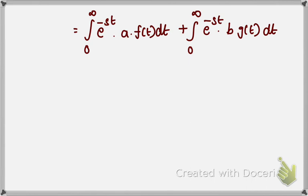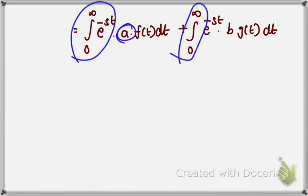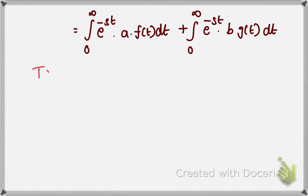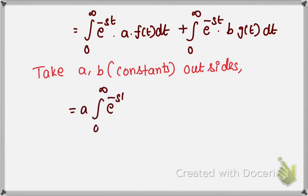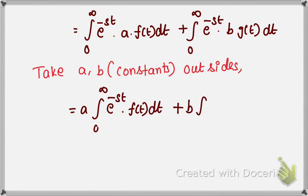Here, A and B are constants. In an integral, constants can be taken outside. So we take A and B outside. After taking the constants outside, the first term becomes A into integral from 0 to infinity of e to the power minus s·t times f(t) dt. Similarly, the second term becomes B into integral from 0 to infinity of e to the power minus s·t times g(t) dt.